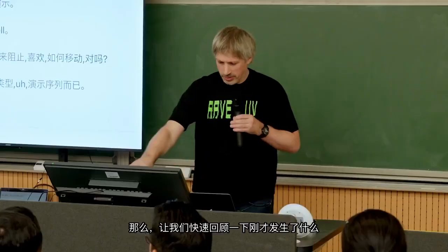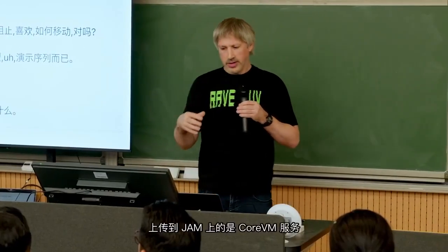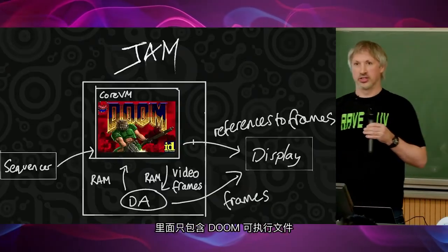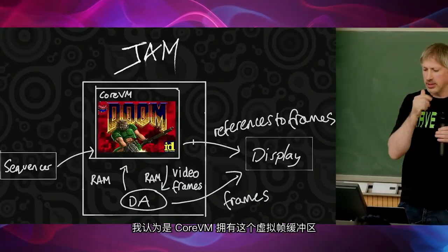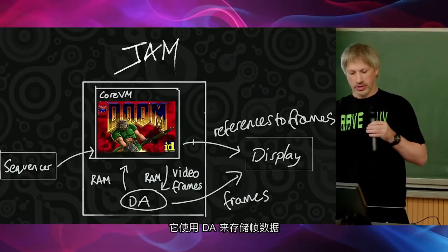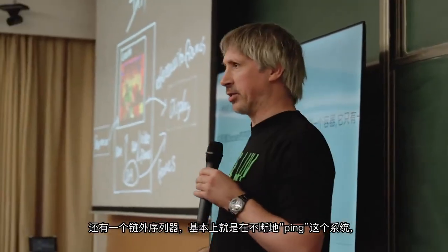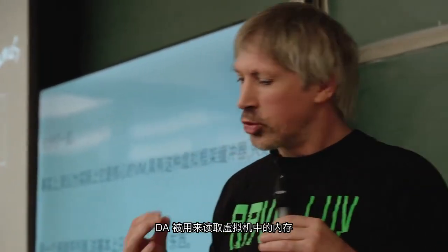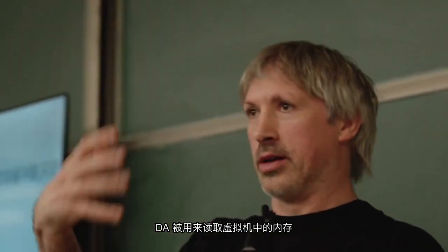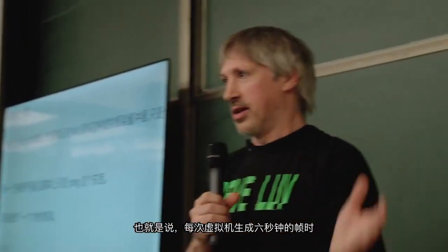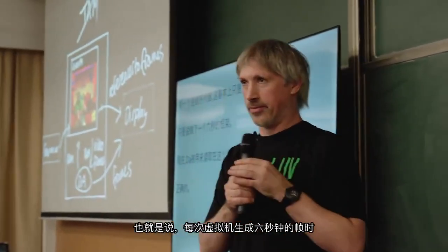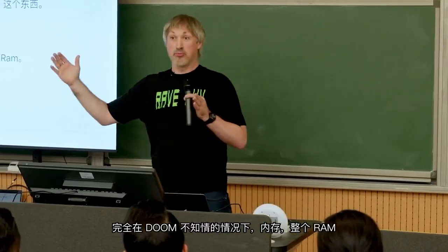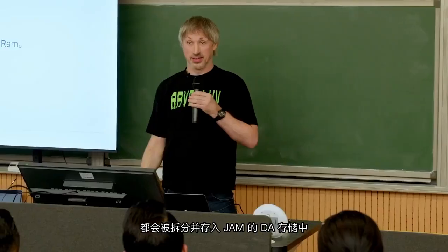So let's have a quick review of what was happening there. Uploaded onto JAM is the CoreVM service — this is like Docker for JAM. Inside of Docker for JAM, there is a container that just has the Doom executable. Together with CoreVM, which has this virtual frame buffer that just uses the DA for storing frames. There's an off-chain sequencer that's basically just pinging this thing, saying: make the next six seconds of frames. The DA is used to read the RAM that was in this virtual machine. Every time the virtual machine generates another six seconds worth of frames, at the end of that — totally without Doom's knowledge — that memory, the whole of the RAM, is being parceled up and put into JAM's DA store.